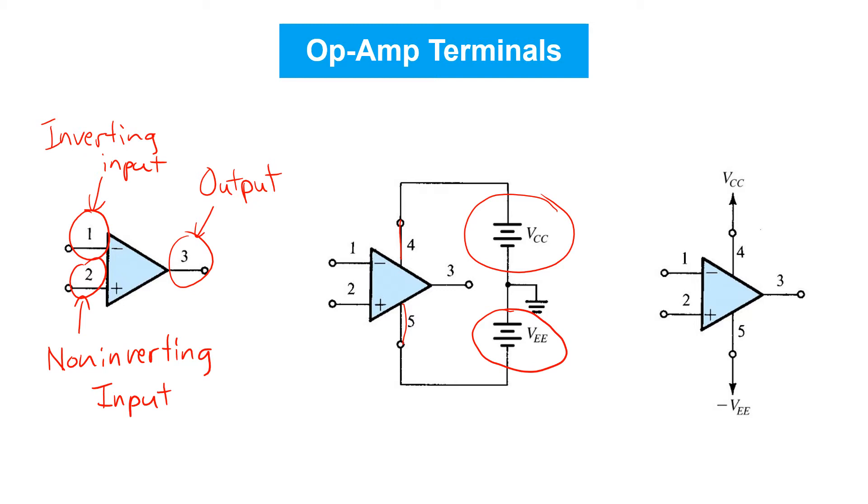Finally, schematics can also be simplified as shown here on the right by simply indicating the voltages to which the positive and negative supply terminals of the op amp are connected without showing the sources explicitly.